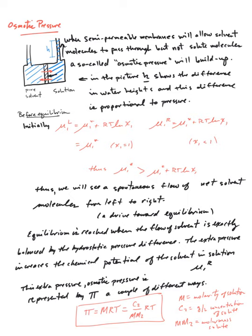In the picture, the value of the letter H, the difference in the heights, is proportional to the pressure. You need to know the density of water and that sort of thing to actually calculate the pressure. We're not going to get hung up on that, but in terms of the thermodynamics, what's going on here?